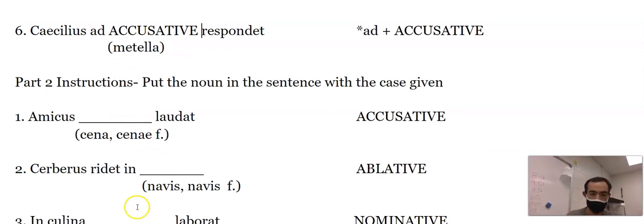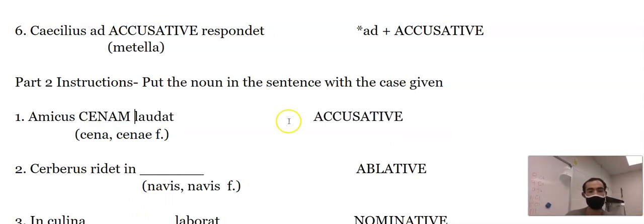We're going to put this noun in the sentence with the case given. So 'amicus laudat cenam.' We want to say the friend praises the dinner. That would be 'cenam' with an A-M. That's a first declension word. It's accusative.